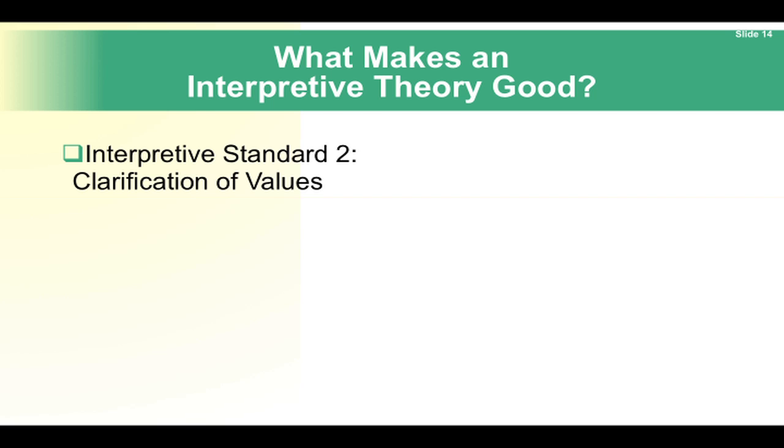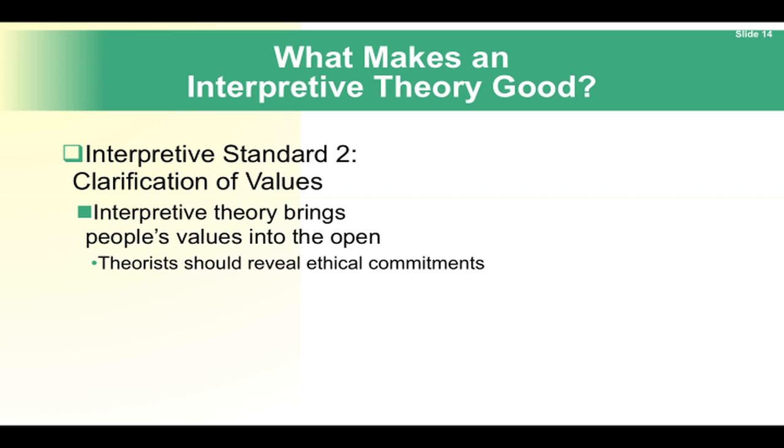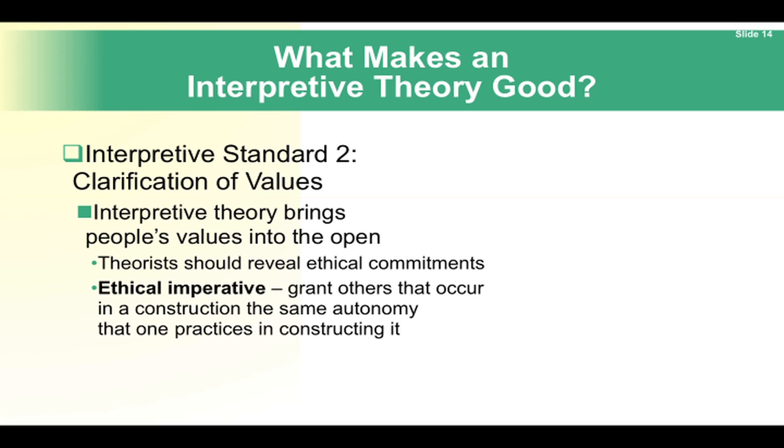Interpretive Standard 2: Clarification of values. An interpretive theory brings people's values out into the open. Theorists should reveal ethical commitments. The ethical imperative is that we should grant others that occur in a construction the same autonomy that one practices in constructing it.